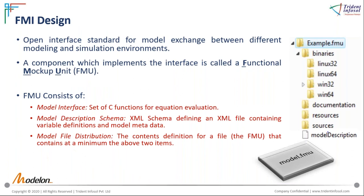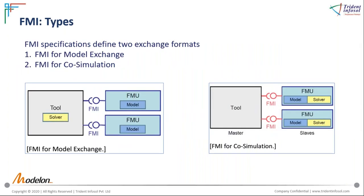FMI acts as a standard interface for model exchange across different modeling and simulation environments. This interface is achieved through a component called FMU — Functional Mock-up Unit. The FMU is a representation of the model, and models are defined by C code. The FMU is made up of C code, with a set of C functions for equation evaluation and the model interface. Details of the model are described by an XML file that defines variables, their attributes, and other static information. Overall, these files are zipped and compressed with the file extension .fmu.